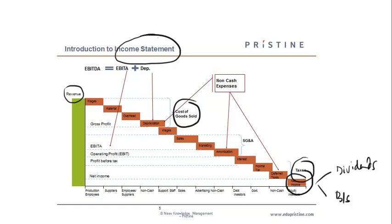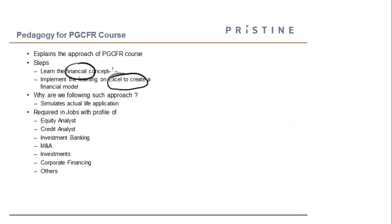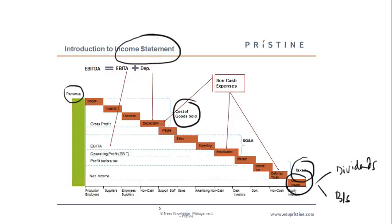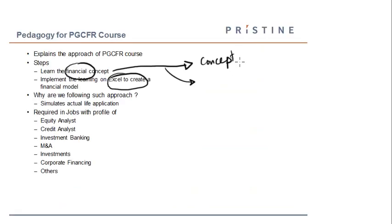Apart from the income, I'll explain how appropriations are done — dividends and what goes to the balance sheet. That's the conceptual part, and it's a must to understand these concepts because they form the basis of the industry. When we cover the concepts, we divide them into two parts: the first is the understanding of the concept, where we explain all the line items — for example, the income statement — and why they are important.